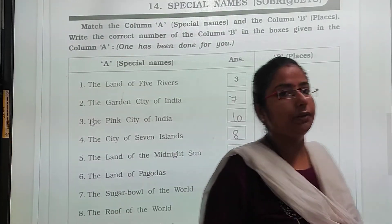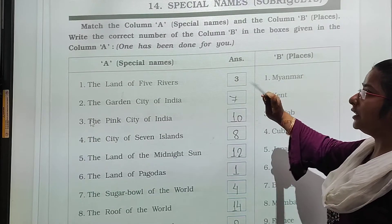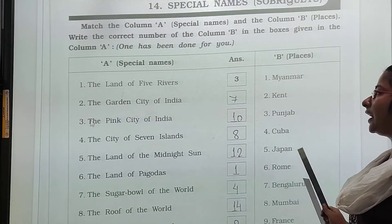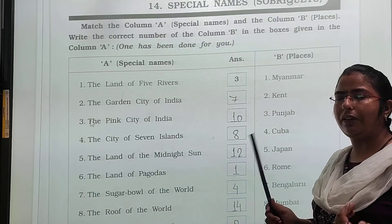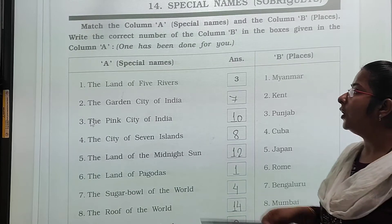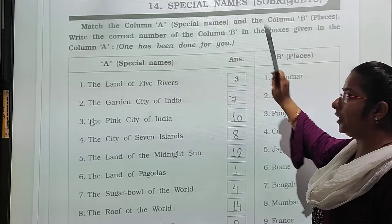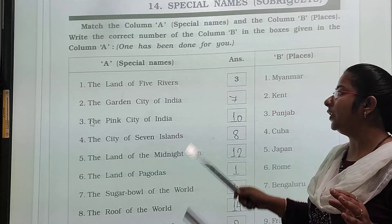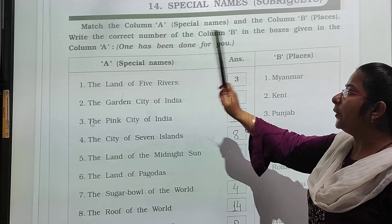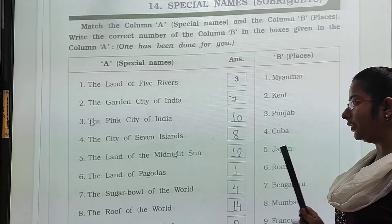Now we will do chapter number 14. Every state or every country has a special name — there are some places with special names. So match column A, which has special names, with column B, which has places. Write the correct number of column B in the box given in column A.